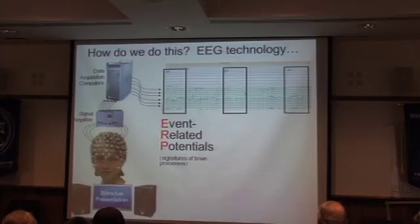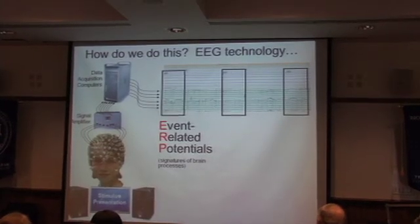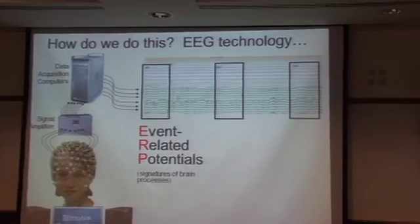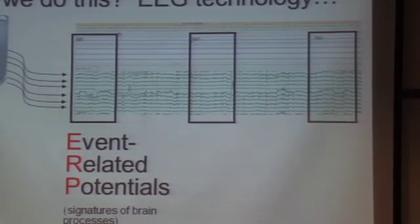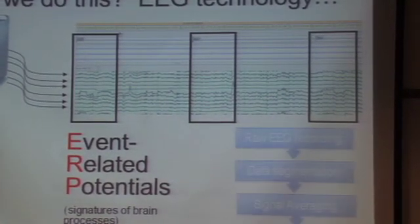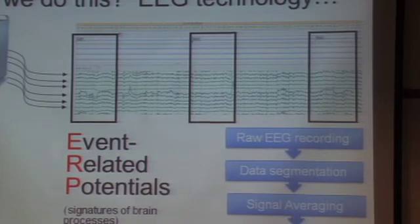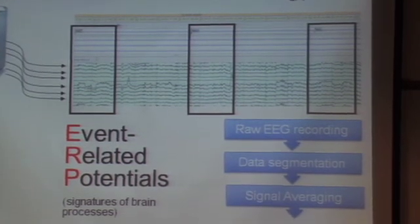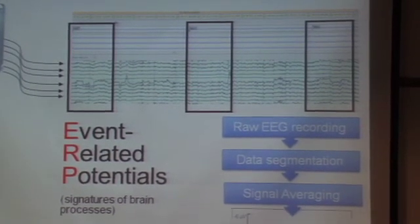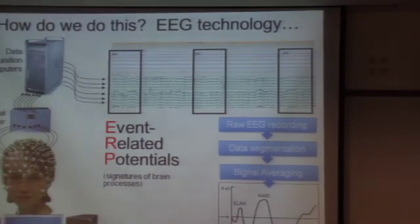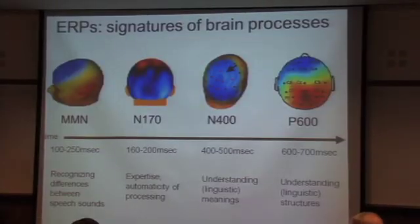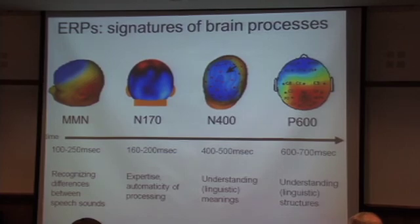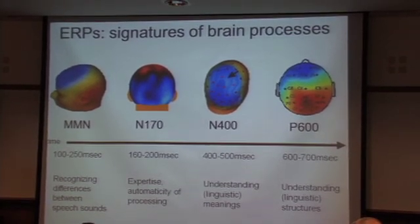What we do is we chop up our data and look at the brain's responses to those particular events. Then once we have those segments of data, we can average those segments together. And that's when we get what we call an event-related potential. These pictures of ERPs have been organized along a timeline that starts when some stimulus is presented.